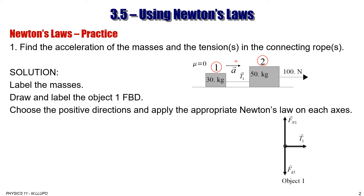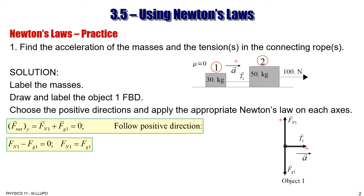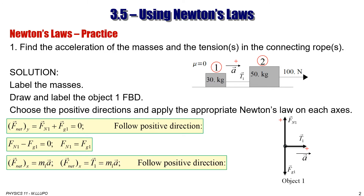Choose the positive direction and apply the appropriate Newton's law on each axis. On the x-axis, use the second Newton's law because it is accelerating. On the y-axis, use the first Newton's law because the object is not moving up or down. So Fn1 equals Fg1. Then on the x-axis, the sum of all forces equals M1a, so T1 equals M1a. T1 is positive and acceleration is positive, so everything is positive for this equation.